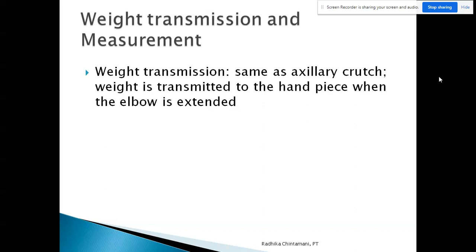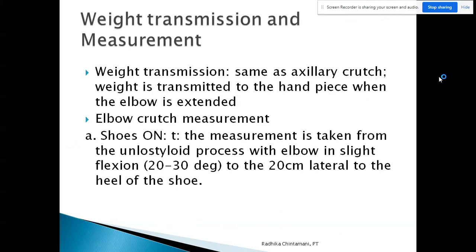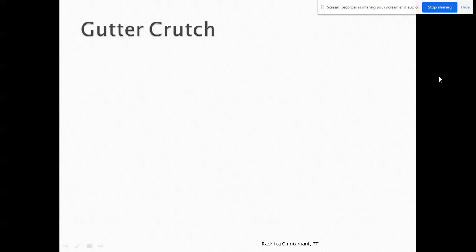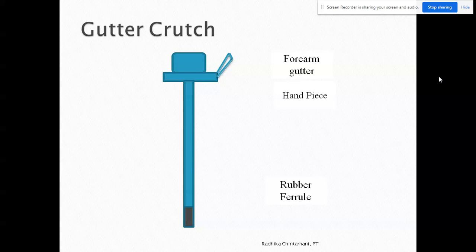Weight transmission for the elbow crutch is similar to the axillary crutch — weight is transmitted to the handpiece when the elbow is extended. For measurement, the elbow crutch uses the shoe on method: measurement is taken from the ulnar styloid process with the elbow in slight flexion to 20 centimeters lateral to the heel of the shoe. Remember, for the shoe on method the endpoint is always 20 centimeters lateral to the heel, whether for axillary or elbow crutch. For elbow crutch, the elbow is in slight flexion of approximately 20 to 30 degrees.